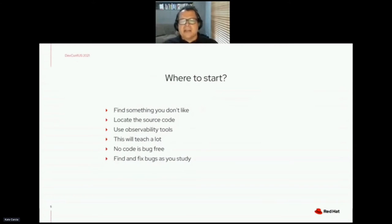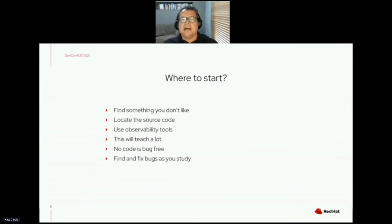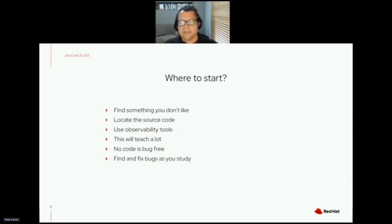Another piece of advice is to use observability tools. You can also use profilers, tracers, and debuggers so that you can see what the main functions are and what the main sequences of events are that lead to a given function. Just by looking at it — especially when what you think is broken is happening — may help you in pinpointing where to try to work on your fix.